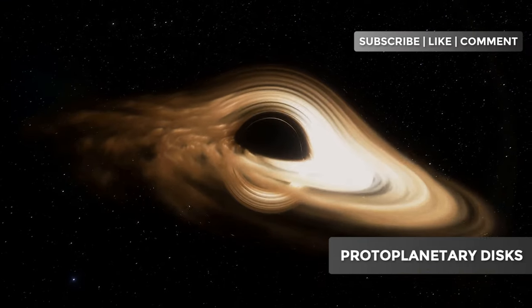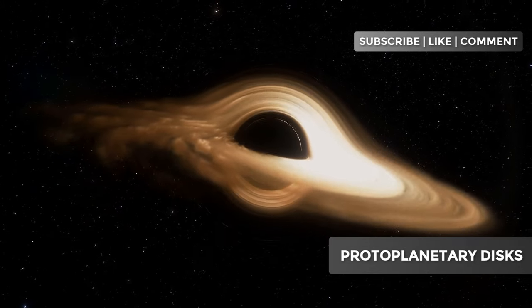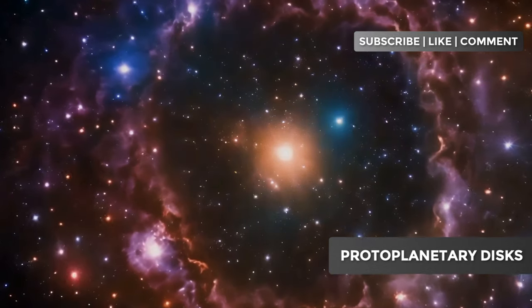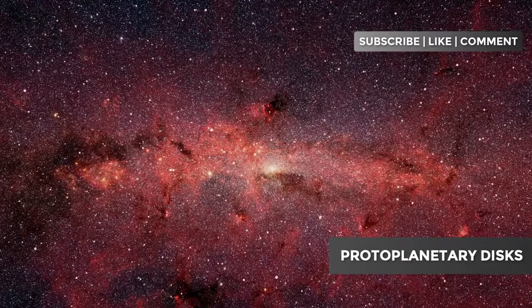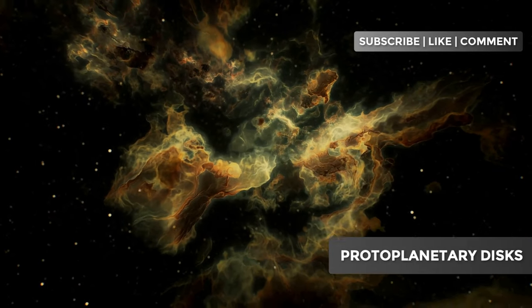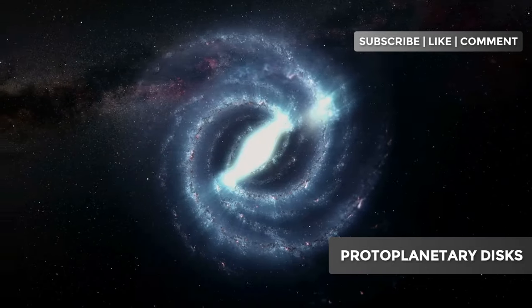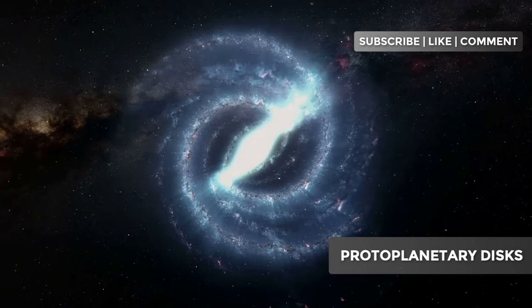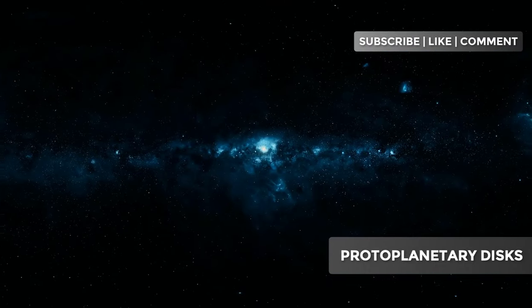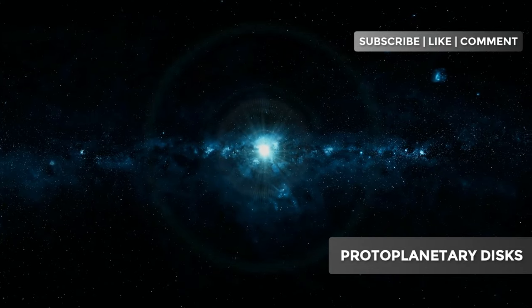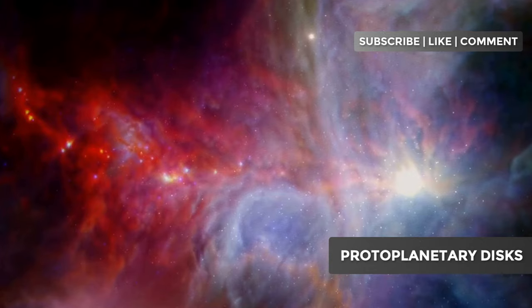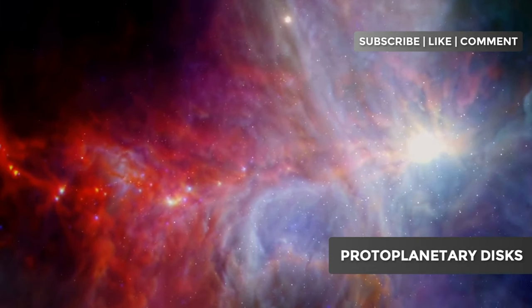The material that doesn't fall directly onto the protostar begins to flatten into a disk due to centrifugal force. It is this disk that will eventually become the protoplanetary disk. Disk formation is not a smooth and uniform process. Shock waves, turbulence, and magnetic fields play crucial roles, creating complex structures within the disk. Concentric rings, spirals, and even gaps can form, each telling a story about the physical processes at work. As the protostar at the center continues to evolve, it begins to emit radiation and stellar winds. These phenomena have a profound impact on the structure and evolution of the disk, sweeping away lighter gas and shaping the environment where future planets will form.